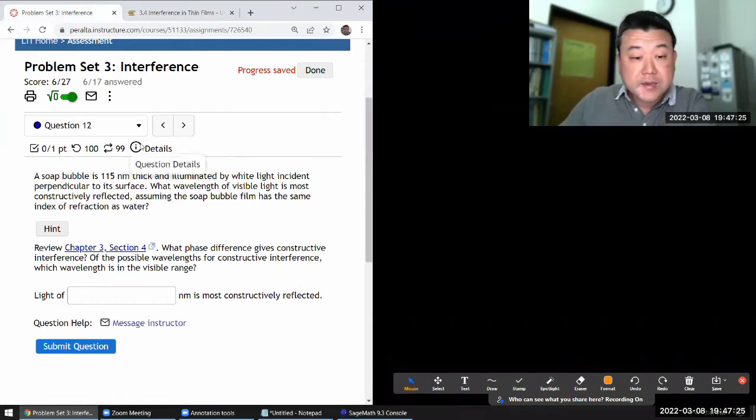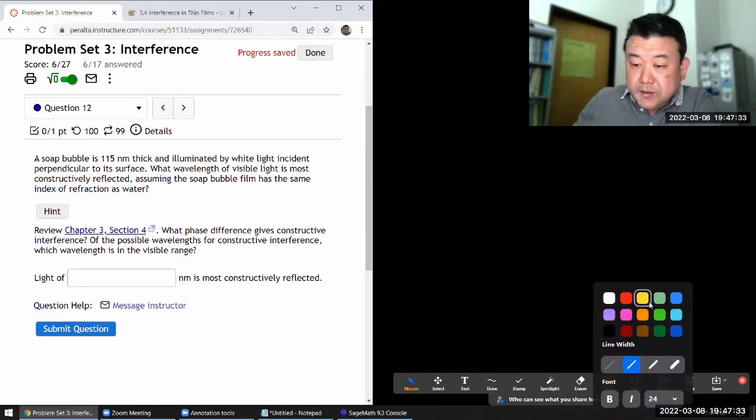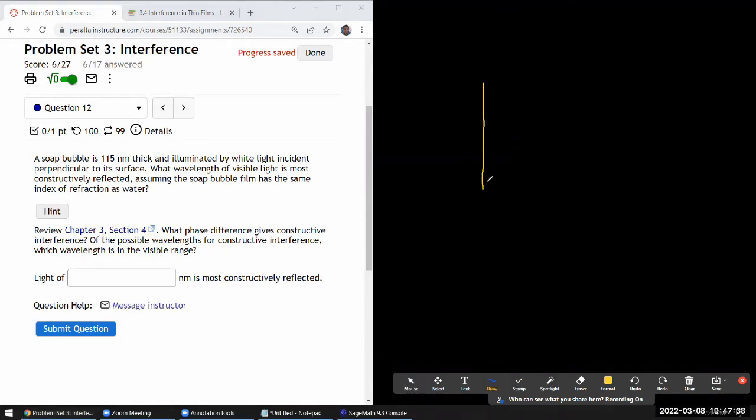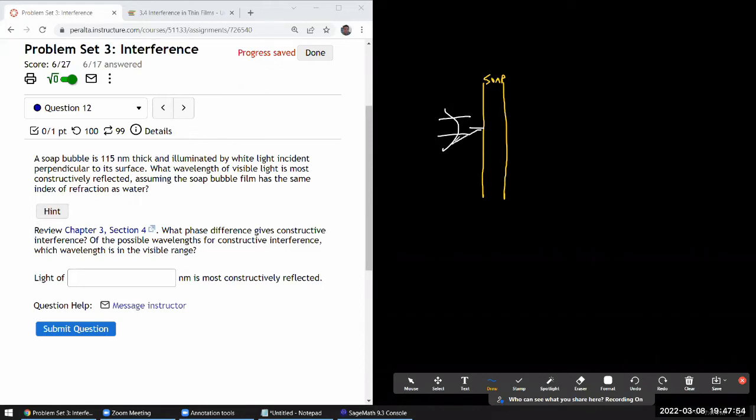So it says a soap bubble is this thick. Let me just start drawing so that I have some picture to anchor my thinking to. So I'm going to just draw the soap bubble surface vertically. Illuminated by white light incident perpendicular to its surface. So I have one reflection here and I have another reflection here. What wavelength of visible light is most constructively reflected.